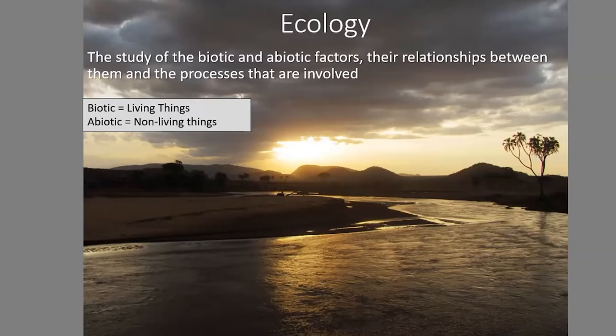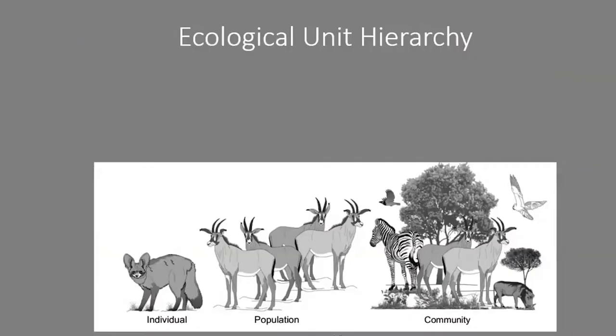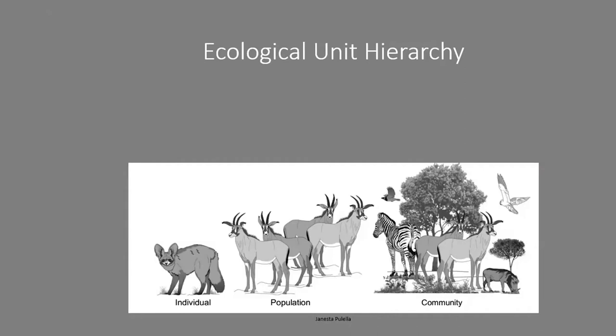It's a very complex but holistic way to look at a system, rather than just looking at one piece at a time. We can start to break down the study of ecology into little ecological units. The most basic is the individual — talking about one zebra, or in this case one bat-eared fox — not an individual species, but one particular individual.